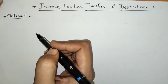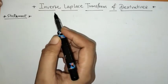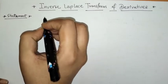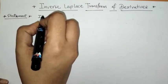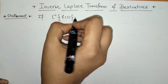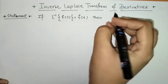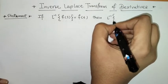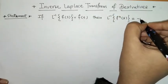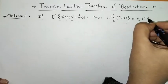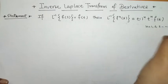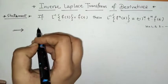Hello everyone, welcome to Unlock Maths. Today we have to discuss the property of inverse Laplace transform of derivative. The statement of this property is: if L-inverse of F(s) equals f(t), then L-inverse of the nth derivative of F(s) is given by (-1)^n times t^n times f(t), where n is finite.